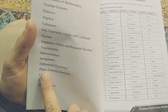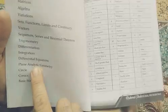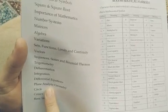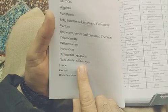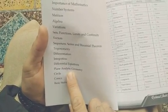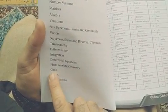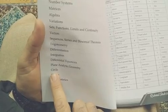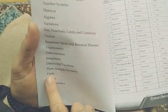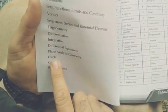The next chapter is plane analytic geometry. This chapter contains all the definitions and formulas used in analytic geometry — for example, distance formula, midpoint formula, ratio formula, and other formulas. The next chapter is circle, which contains all the formulas used in circles such as equation of circle and properties of circle.